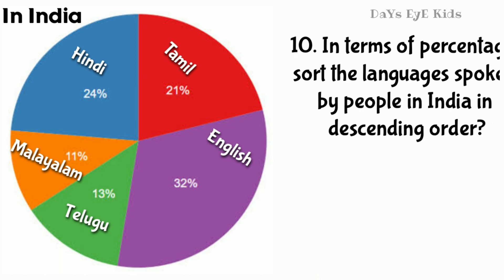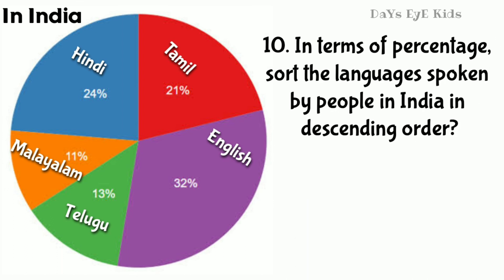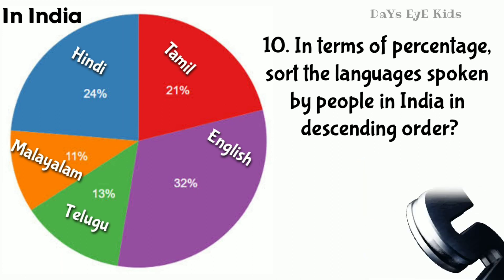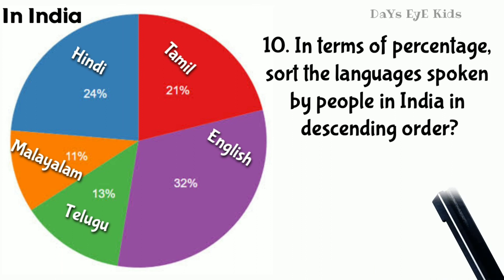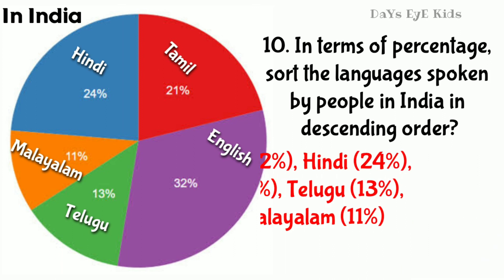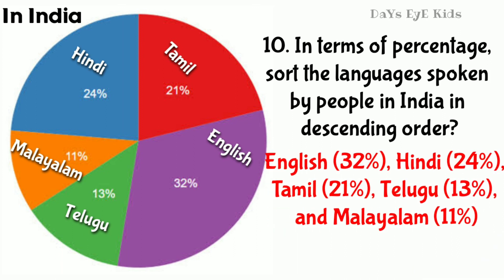In terms of percentage, sort the languages spoken by people in India in descending order. English 32%, Hindi 24%, Tamil 21%, Telugu 13%, and Malayalam 11%.